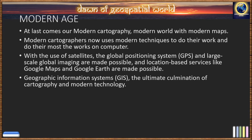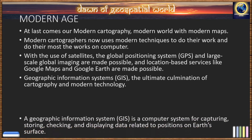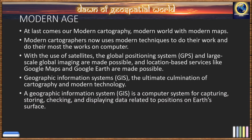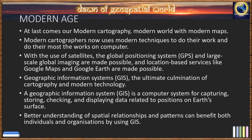Geographic Information System, or GIS, represents the ultimate combination of cartography and modern technology. A GIS is a computer system for capturing, storing, checking, and displaying data related to positions on Earth's surface. Better understanding of spatial relationships and patterns can benefit both individuals and organizations by using GIS.